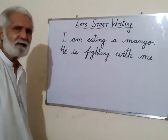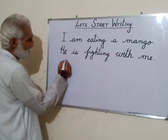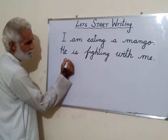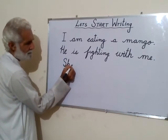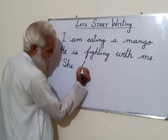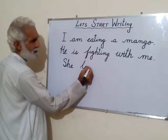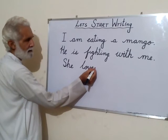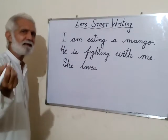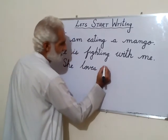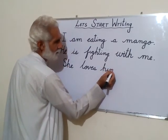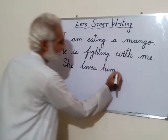Now let's write 'She loves him.' S is here — simple, take it from down. H and E — 'she.' She loves: L, O, V, E, S — loves. Make it 'him': H, I, M — 'him.' Full stop. 'She loves him.'